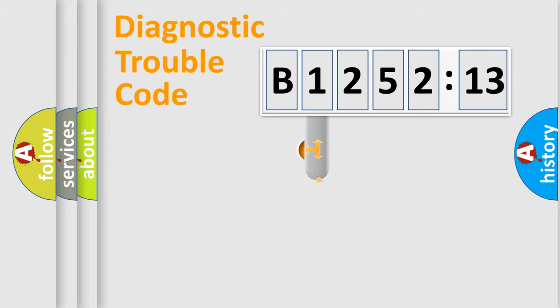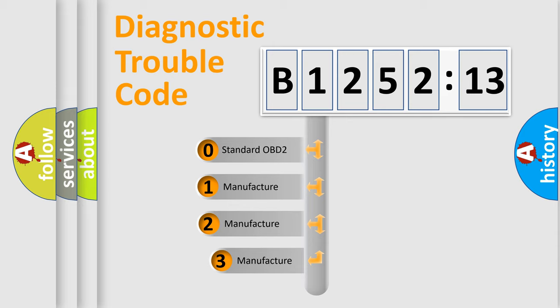Powertrain, Body, Chassis, and Network. This distribution is defined in the first character code.